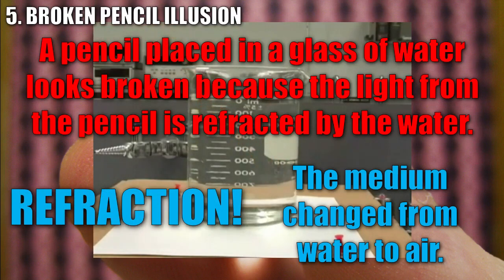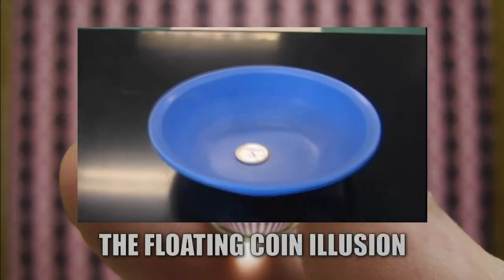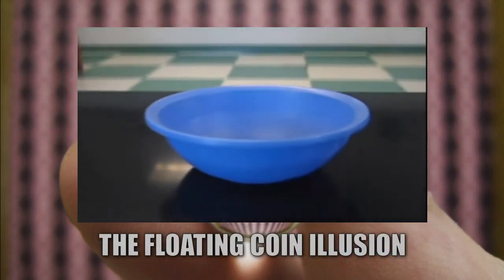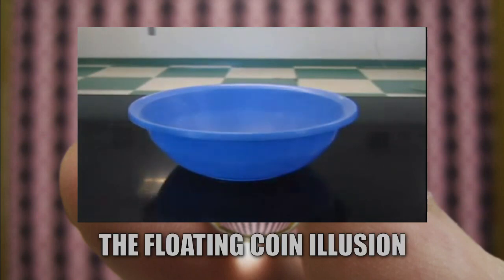Let's look at another refraction illusion. This one's called the floating coin illusion. So you place a quarter at the bottom of a bowl, and you take a few steps back until the quarter is hidden by the bowl. And now we can actually make the quarter visible, not by moving forward again, but by pouring water into the bowl. And when we do this, the quarter will appear.